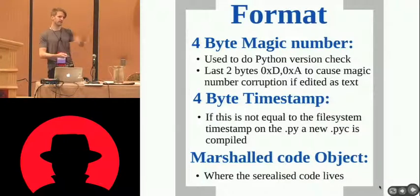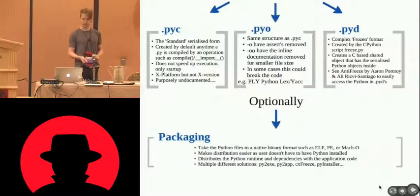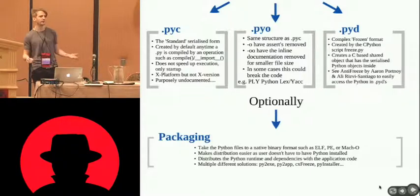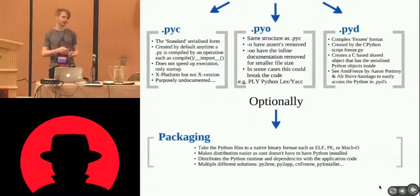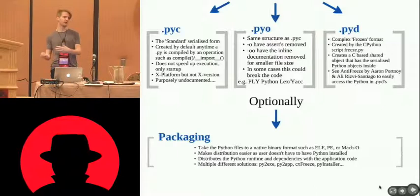After these eight bytes, there's just the marshaled code objects — code objects from Python, serialized out. And obviously there are packaging technologies: PY2X, PY2APP, CX3s, etc., which allow people to bundle their code along with the runtime into one big ball for easier distribution. The biggest thing it allows is developers to have a modified runtime which they release with their code, with modifications intended to avoid people being able to reverse the PYCs back out.